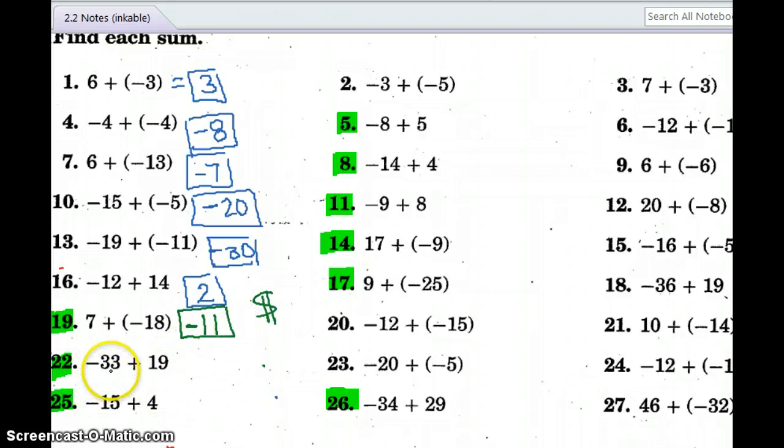I changed over to green because I want you to keep remembering that green money. If we're talking about money, something costs $33. I'm going to be negative $33. I have $19 that I can go ahead and pay.